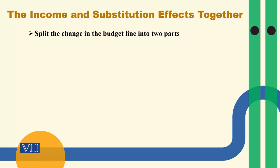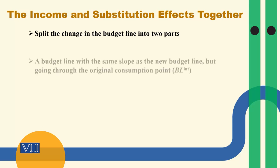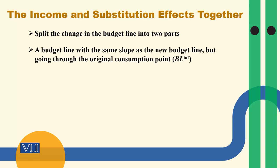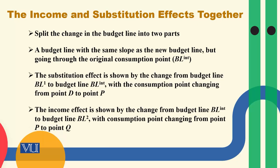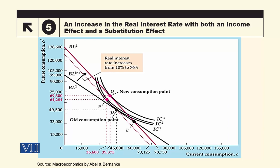اب ہم graphically اس کو discuss کریں گے کہ income اور substitution effect ایک ساتھ کیسے کام کرتے ہیں۔ ہم budget line کو دو حصوں میں split کریں گے اور پھر ہم دیکھیں گے کہ اس میں سے کتنا income effect ہے اور کتنا substitution effect ہے — اس کو graph کی مدد سے سمجھتے ہیں۔